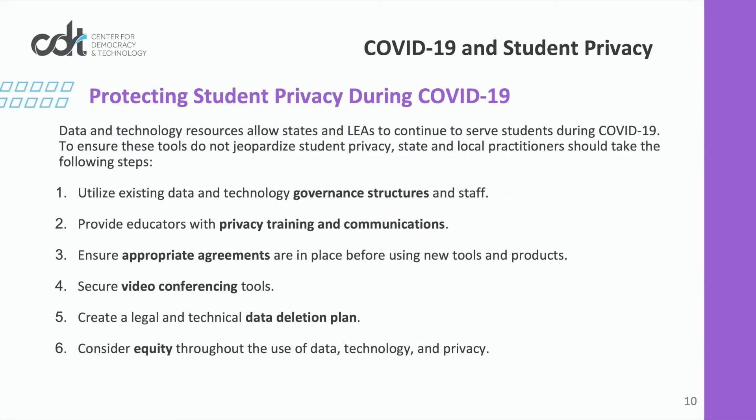Data and technology resources are critical in allowing states and LEAs to continue providing education services. You should take six critical steps to ensure ongoing privacy protections: utilize existing data governance structures; train educators; use appropriate agreements; secure video conferences; create a data deletion plan; and consider the impact of using data and technology on privacy and equity.